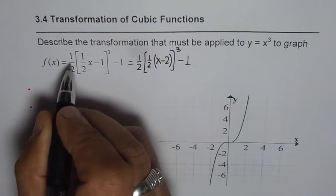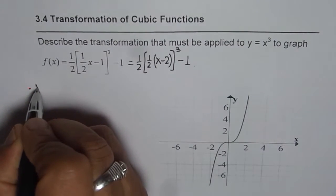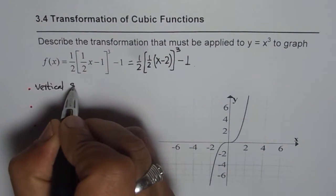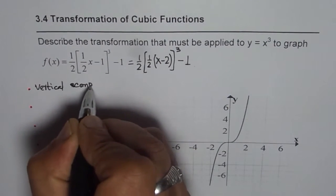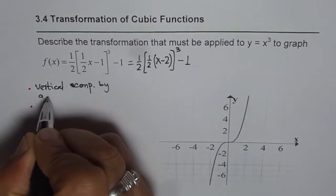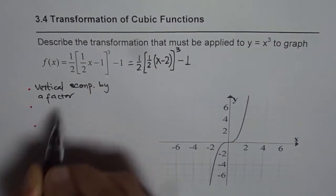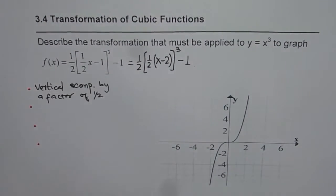So let us begin with the left most number which is half here which represents vertical stretch. I should write compression. It is less than 1. Compression by a factor of, it is important to write factor since we are multiplying, factor of half. Is it okay?